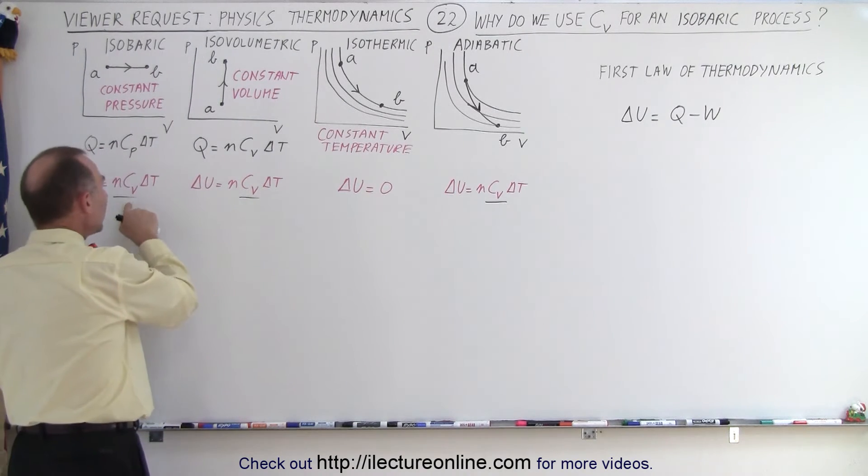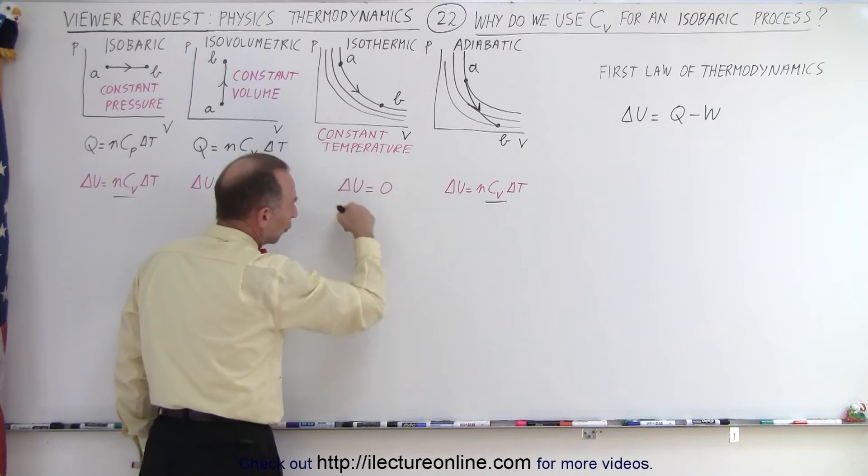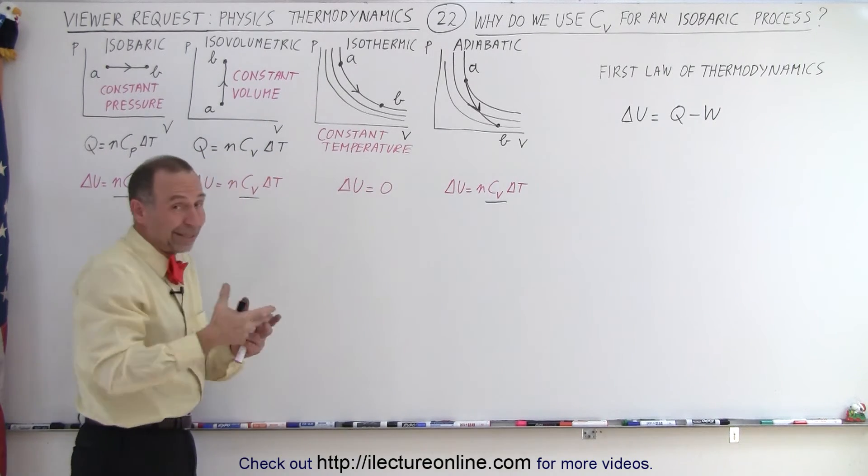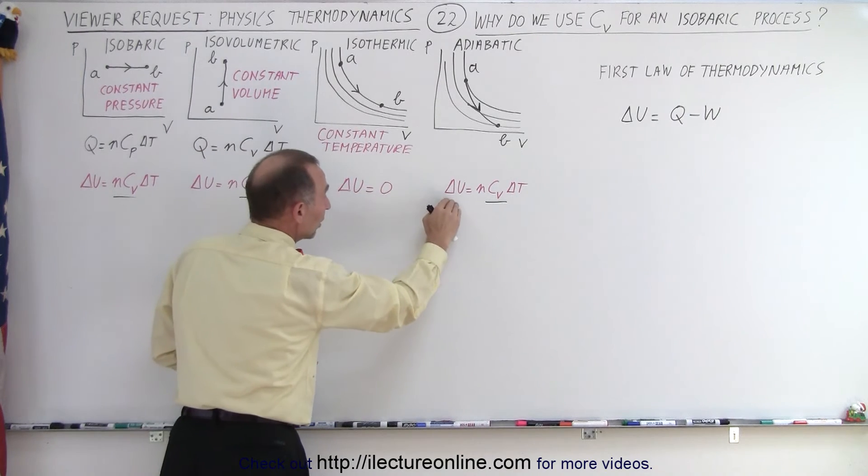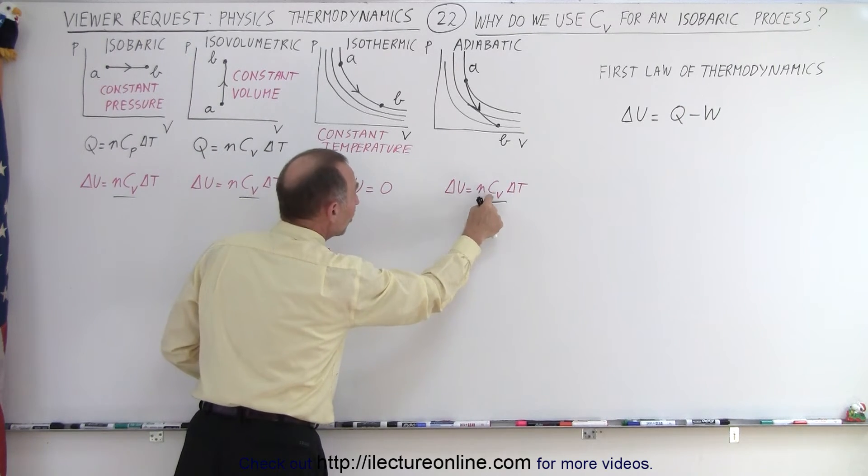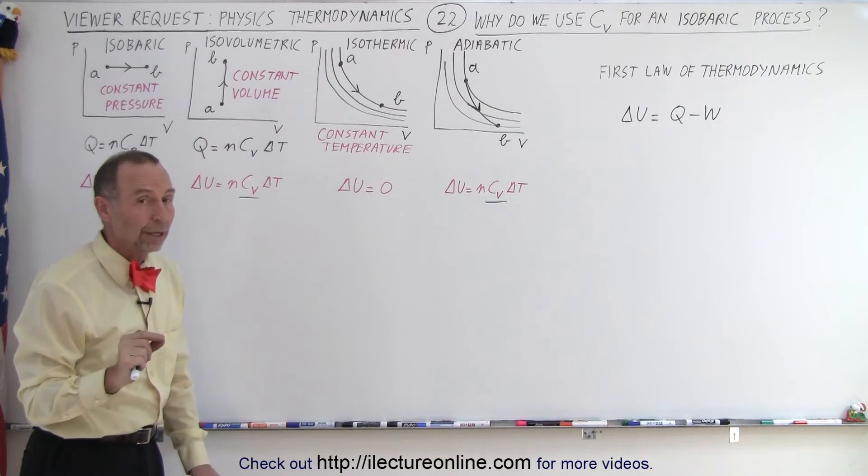Well, we always use it, no matter what the process is, and of course, here we would use it as well, except delta T is equal to zero. But whenever we're calculating the change in internal energy, we always use C sub V, no matter what process we're dealing with.